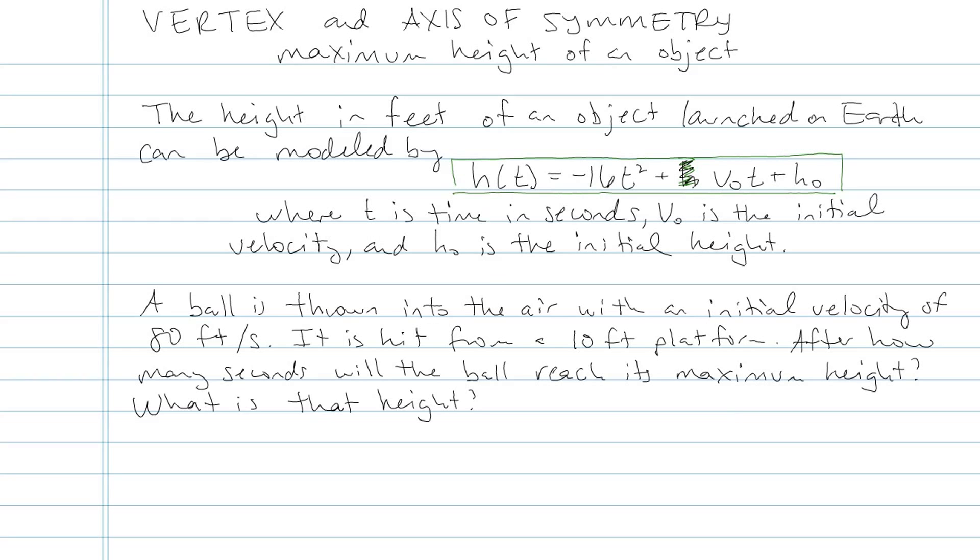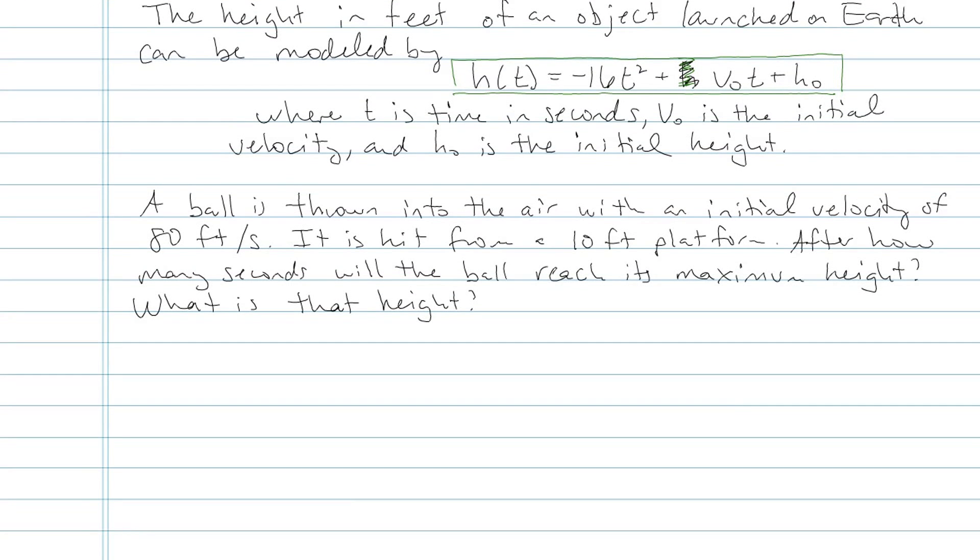Let's go ahead and look at a specific problem. This is something you might see in your homework. A ball is thrown into the air with an initial velocity of 80 feet per second. It is hit from a 10-foot platform. After how many seconds will the ball reach its maximum height and what is that height?